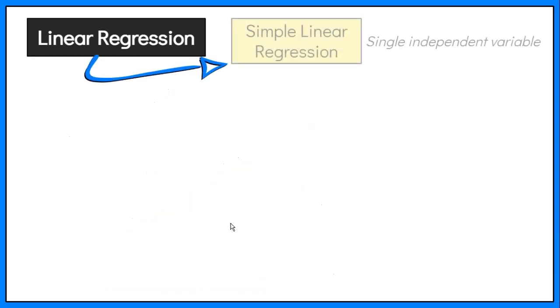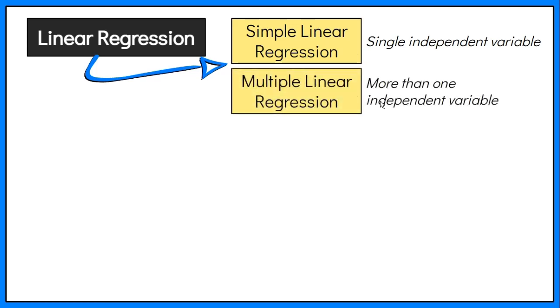If there is a single independent variable, it's a type of linear regression called simple linear regression. If there are more than one independent variable, it's multiple linear regression.